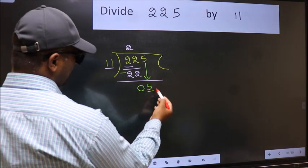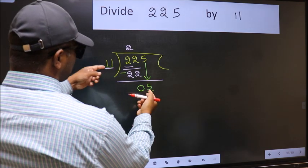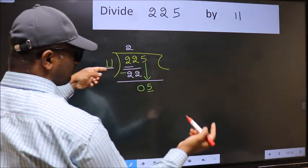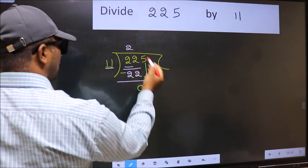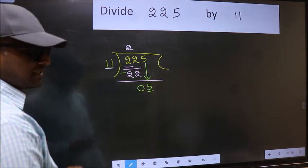Here we have 5, here 11. 5 is smaller than 11. So what many do is they directly put dot and take 0, which is wrong.